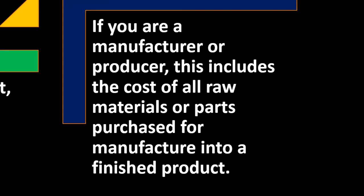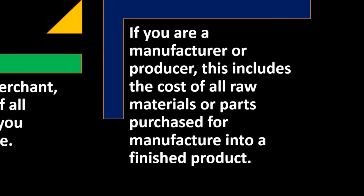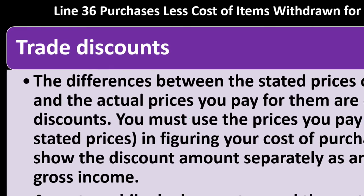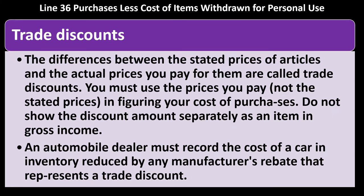If you are a manufacturer or producer, Line 36 includes the cost of all raw materials or parts purchased for manufacture into the finished product. Trade discounts: the difference between the stated price of articles and the actual prices you pay are called trade discounts. You must use the prices you actually pay — not the stated price — when figuring your cost of purchases. Do not show the discount amount separately as an item in gross income. An automobile dealer must record the cost of a car in inventory reduced by any manufacturer's rebate that represents a trade discount.